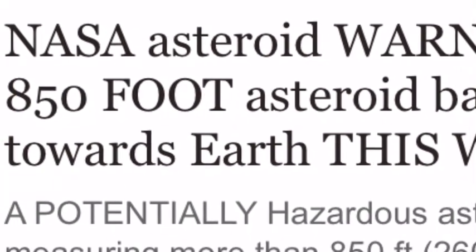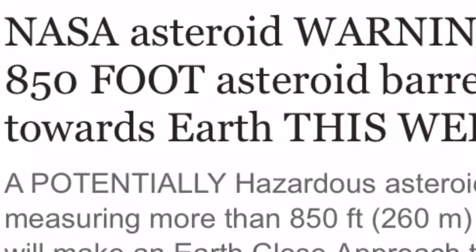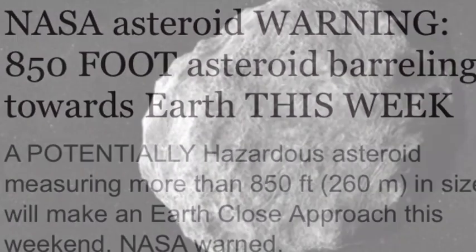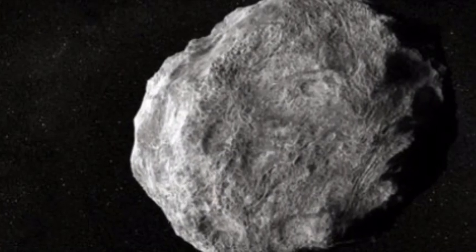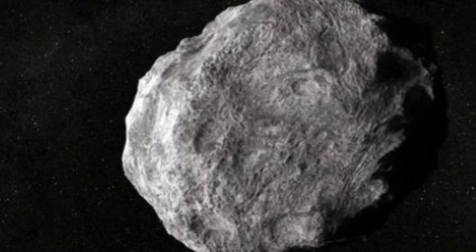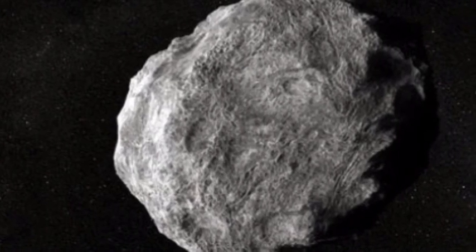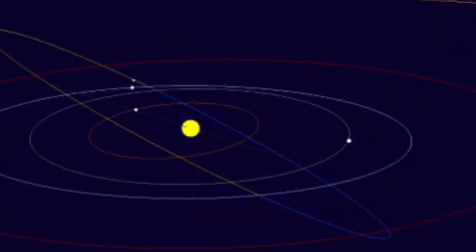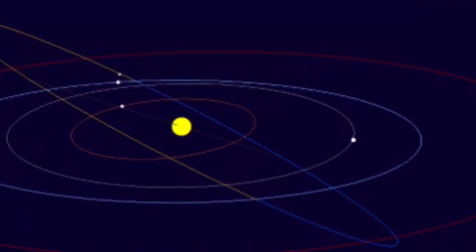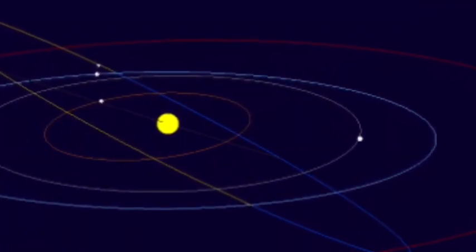NASA asteroid warning: an 850-foot asteroid barreling towards Earth this week. A potentially hazardous asteroid measuring more than 850 feet, or 260 meters in size, will make an Earth close approach this weekend. NASA warned the monstrous space rock, dubbed asteroid 2018 EB...